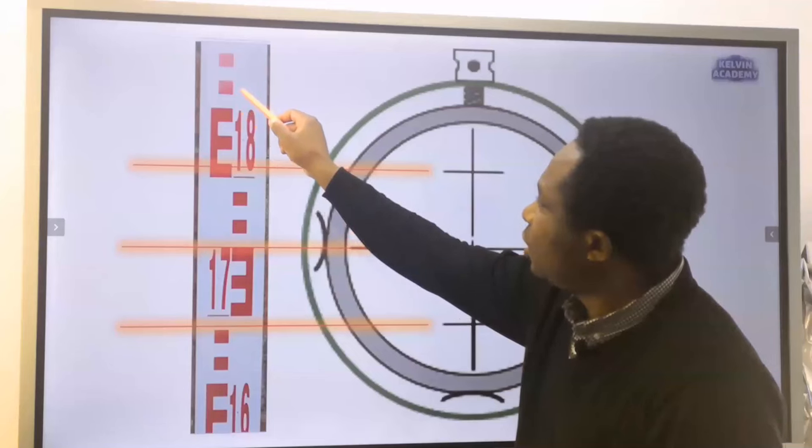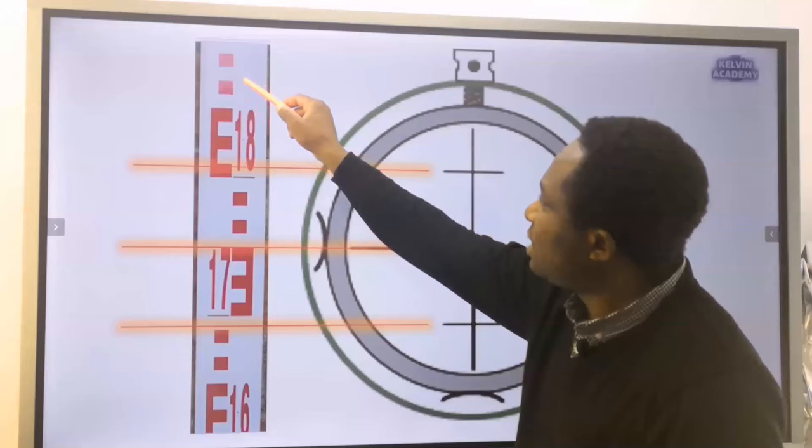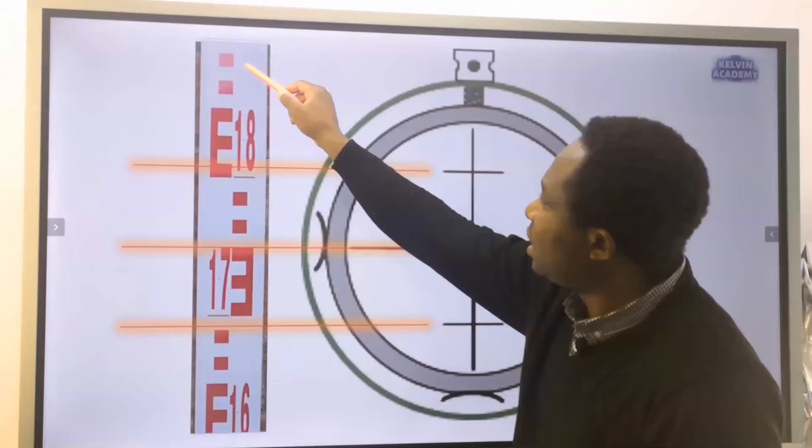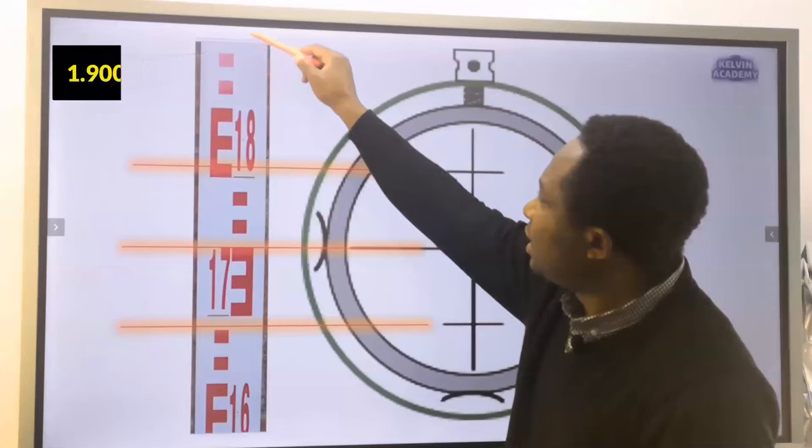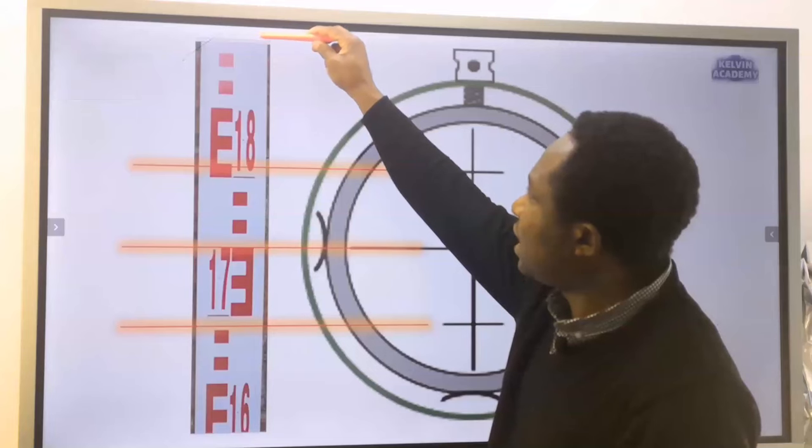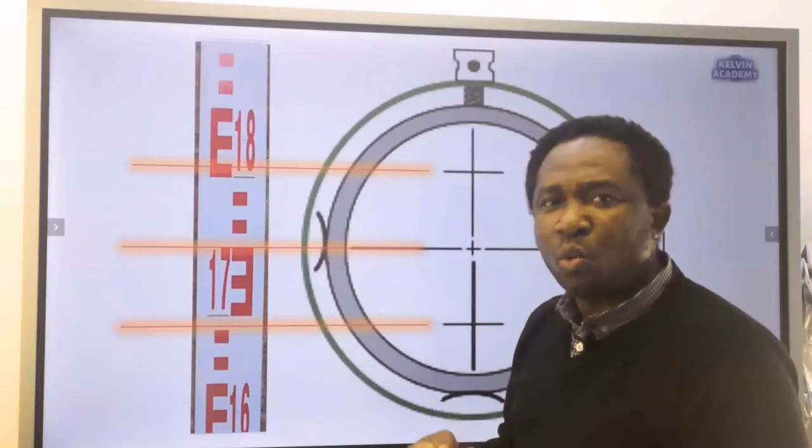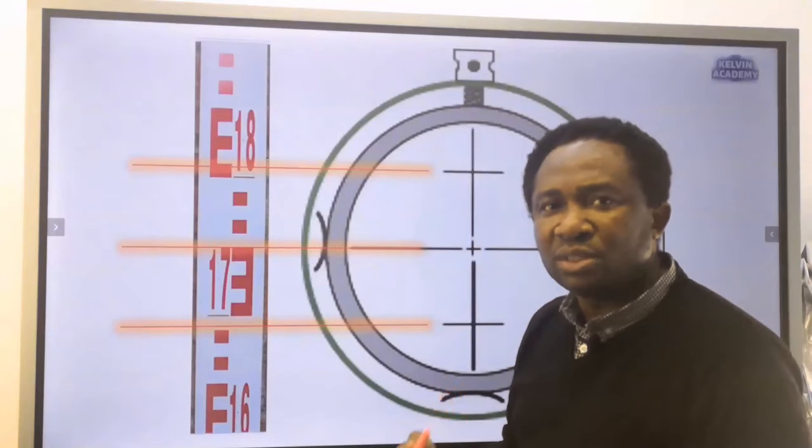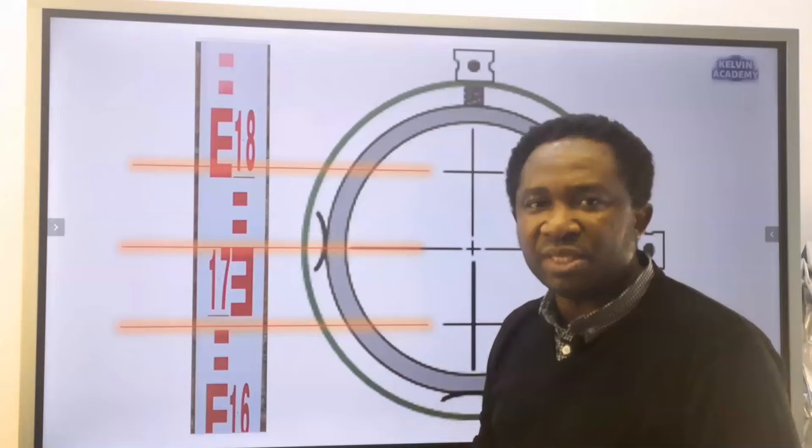This is 1.860. This is 1.870. And this is 1.890. The next will start as 1.900, which is the next E, which is 1.9 to 3 decimal places, which is 1.900 meters.